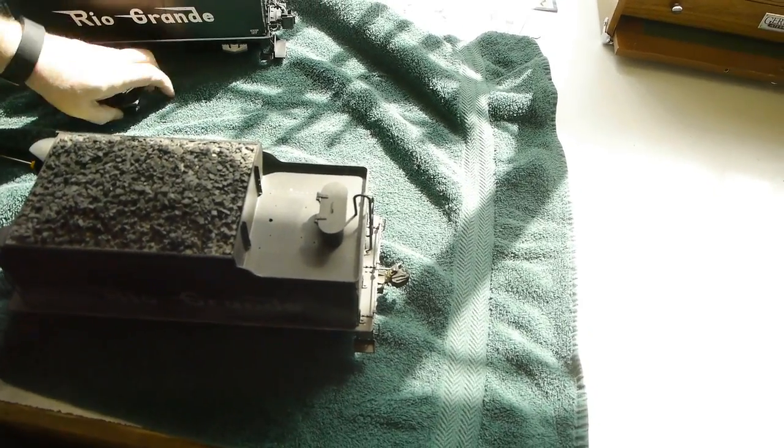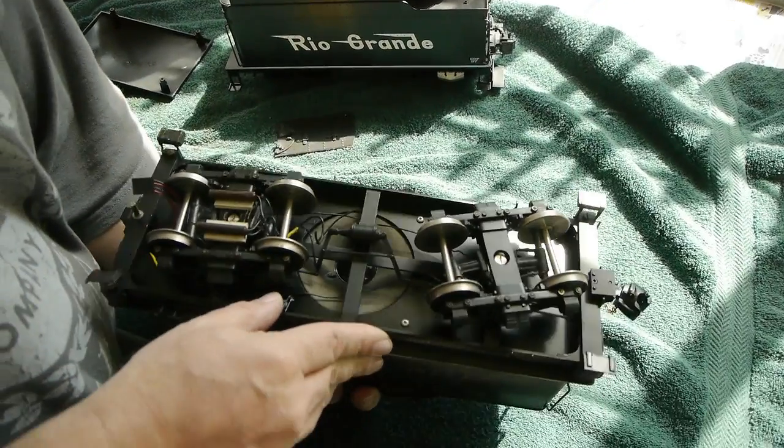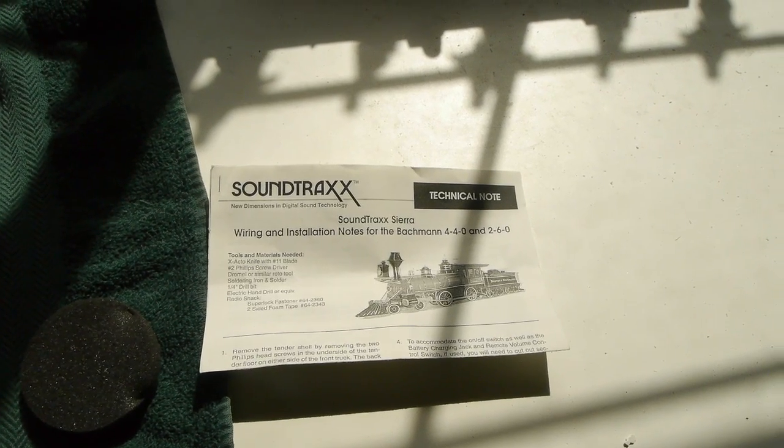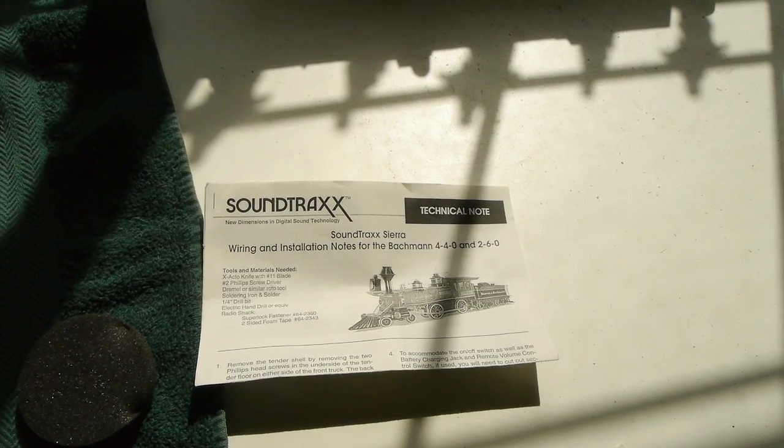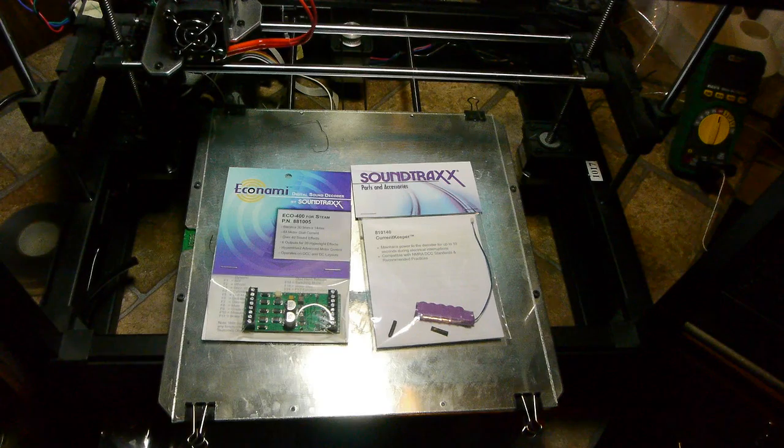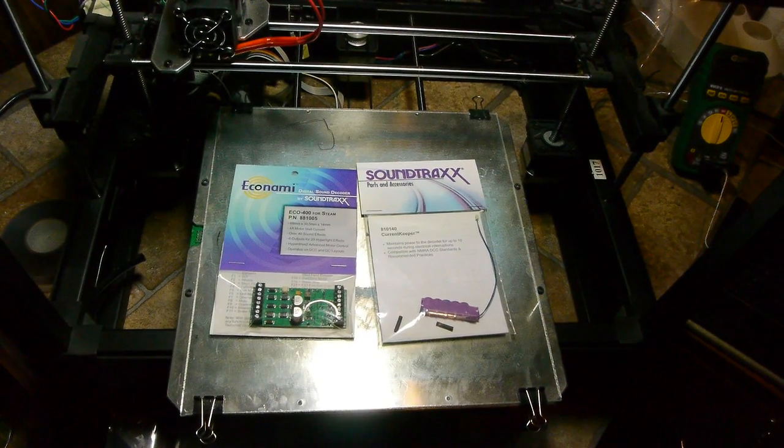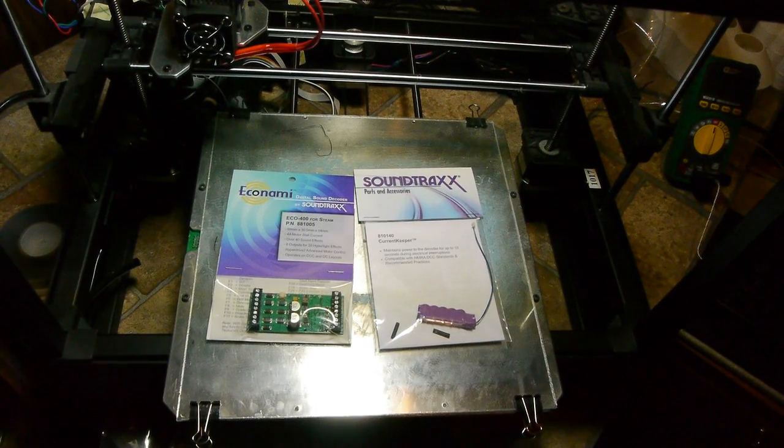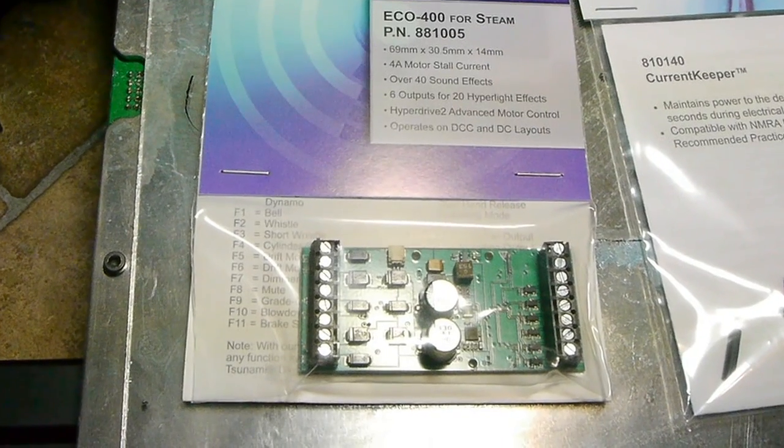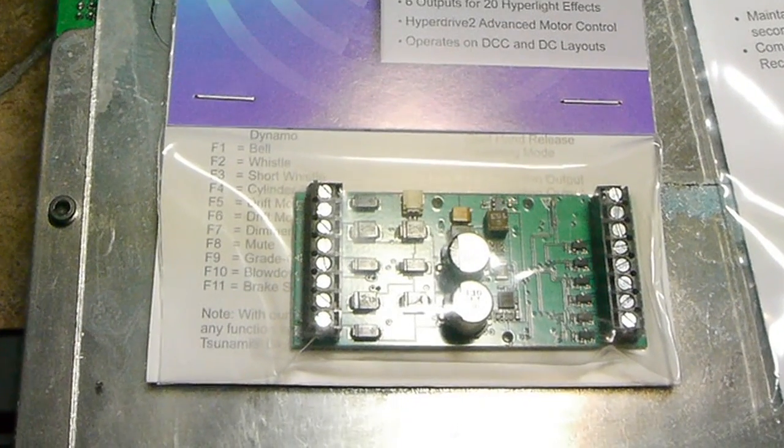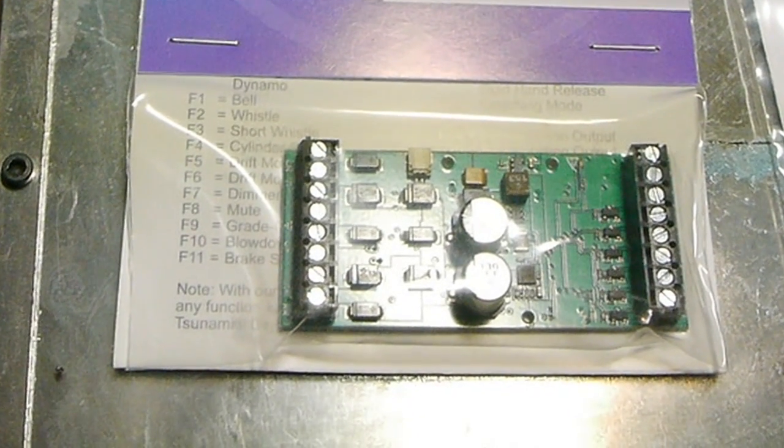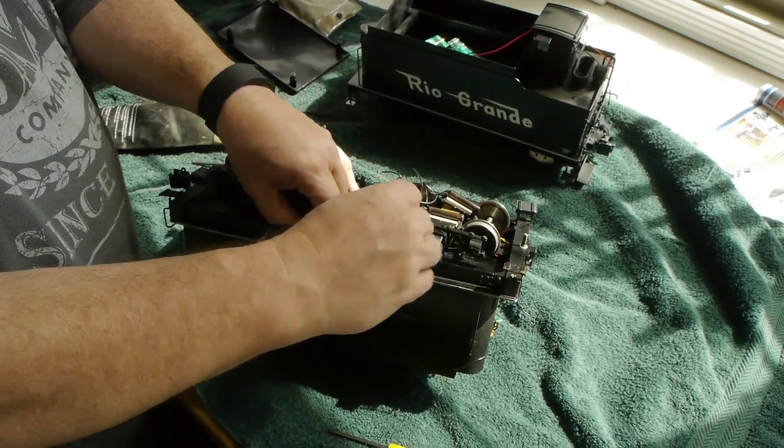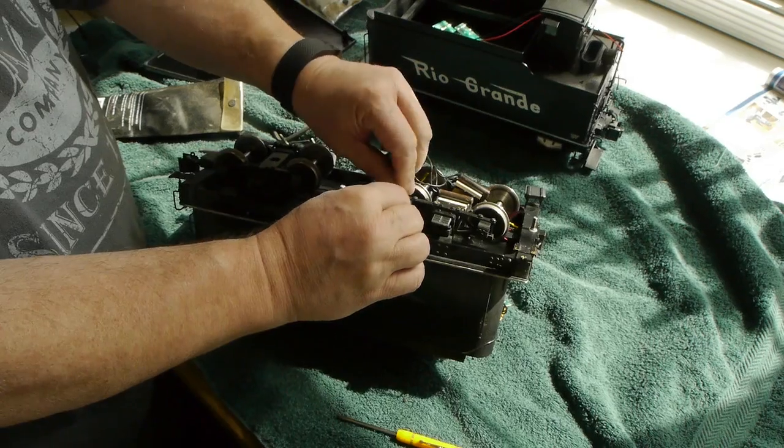Don now has the Bachmann tender torn to pieces, so we're moving on to the AccuCraft tender. The AccuCraft tender already has a speaker in there, but we're redesigning this whole thing. It also has a SoundTraxx sound system, an earlier version. We're pulling that out because it doesn't have motor control DCC. What we're putting in is this - the Economy 400 sound system, which is perfect for this engine because it can handle four amps. We're putting in a keep-alive system, a current keeper as well. Just imagine all of the sounds that we're going to need are pre-recorded on this little board right here.